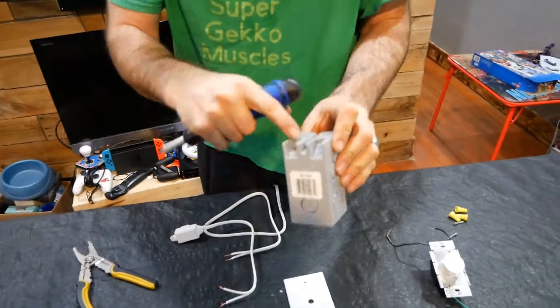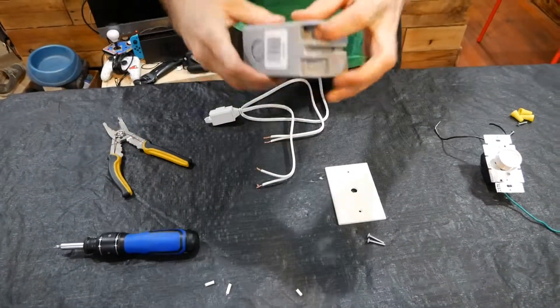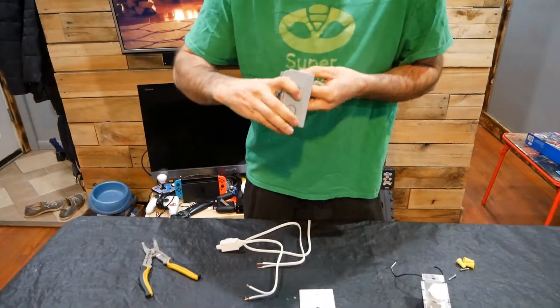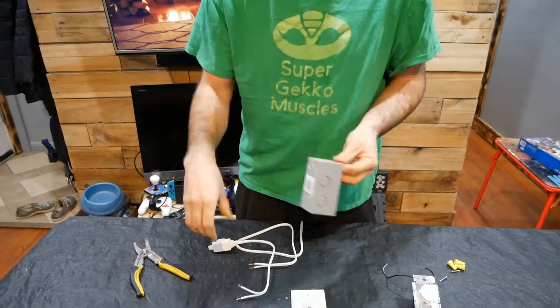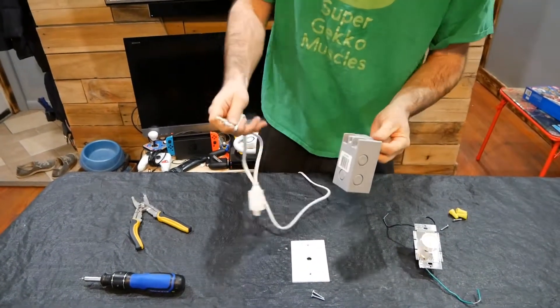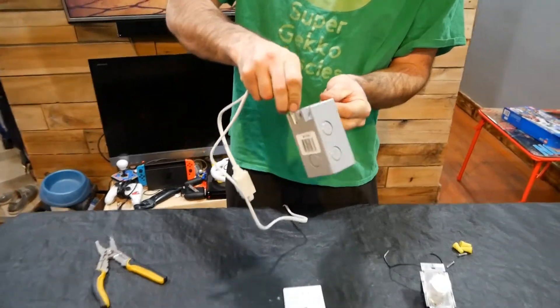We're going to punch out the hole in the box. We're going to run our male and female end wires through the hole.